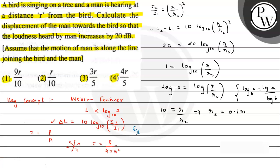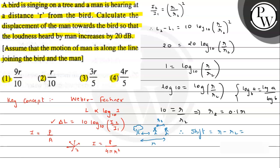Let's visualize the condition: this is the tree, and the man is standing at an initial distance r. Now, how far has the man moved forward so that the loudness increased by 20 decibels? The new distance is r2 = r/10. The displacement (shift) of the man is r minus r/10, which equals 9r/10. So the answer is option one: 9r/10. I hope you understood the solution, all the best!